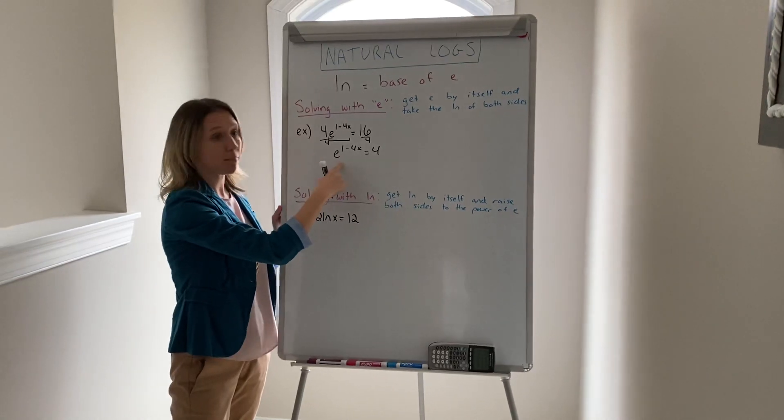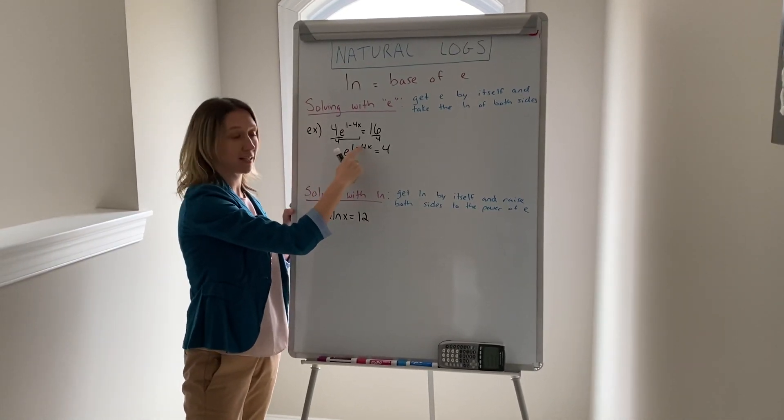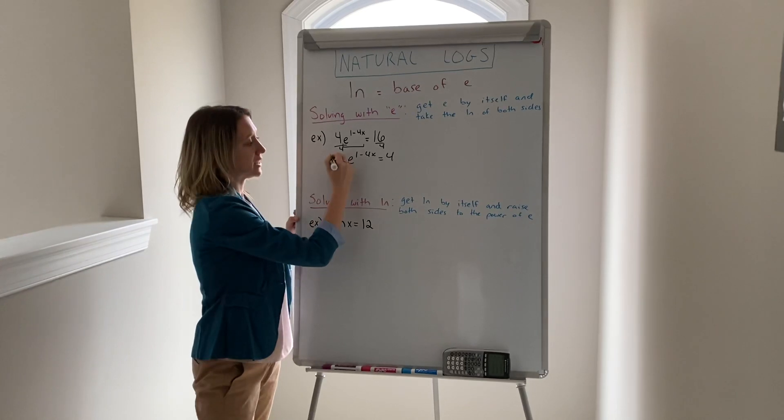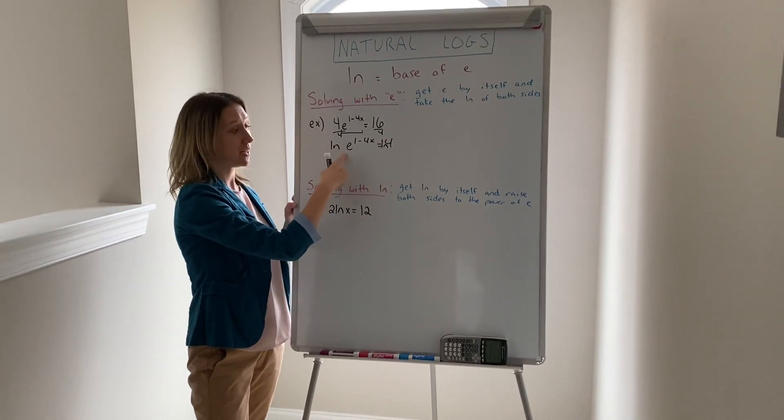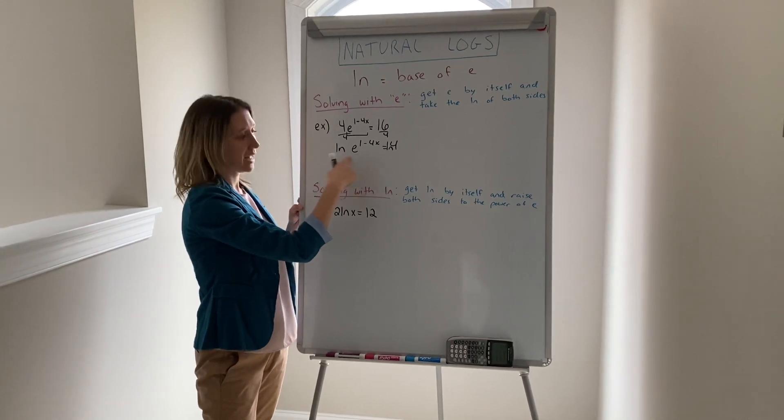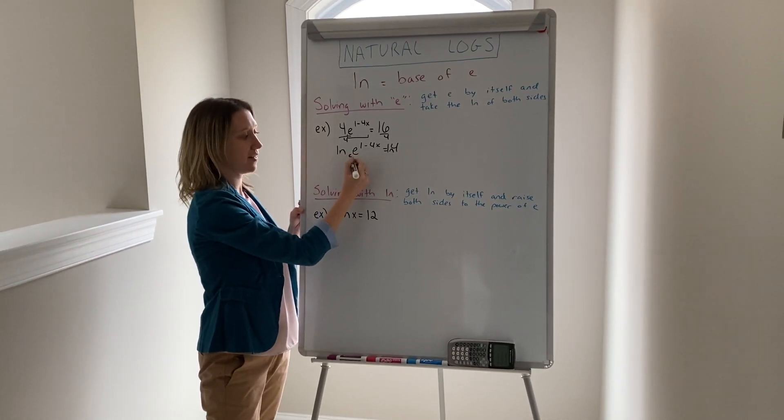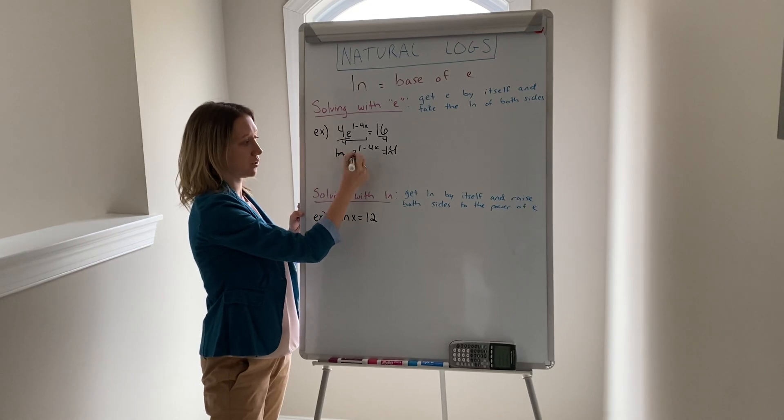Now that I have the e by itself and there's something else on its level, it's okay that there's stuff in the exponent but nothing else here. We take the natural log of both sides. Now the reason that we do this is because the natural log and e cancel each other out because the base again is e and anything that has the base and this number the same cancel out.